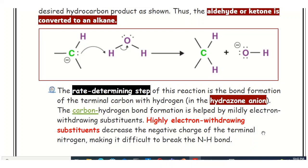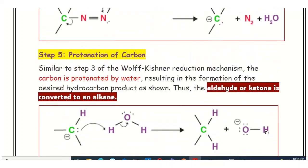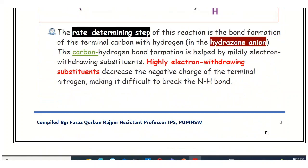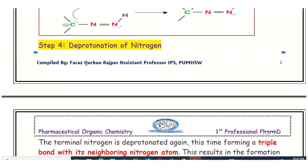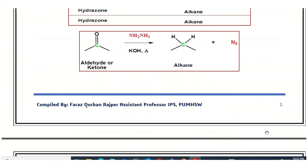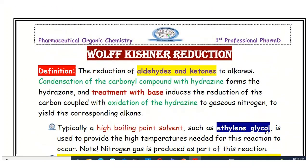In conclusion, Wolff-Kishner reduction is an important organic chemistry reaction in which carbonyl compounds — aldehydes or ketones — react with hydrazine and are converted into alkanes or simple aliphatic compounds. The type of alkane formed depends on the type of aldehyde or ketone used. This reaction requires a high-boiling solvent and the base potassium hydroxide.